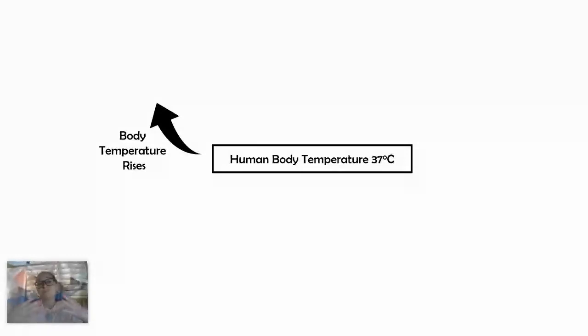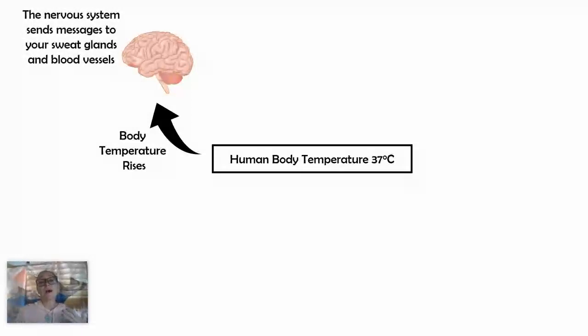Once your body temperature rises, your brain will actually receive those signals. Those electrical impulses from your sensory neurons will send a message to your brain, and then your brain will coordinate how your body will respond. So there's two responses that we're going to talk about.